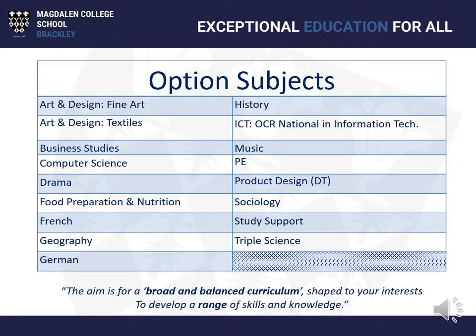These are the options subjects — this is the full list. Our key aim for you is a broad and balanced curriculum, and this is really important. You'll see this mentioned a few times. It's important that you have a range of subjects. Nobody knows what the future holds and what skills or knowledge you'll need. GCSEs are not about preparing for a job — they're about preparing for life in general, so that you know what's going on as you go through life.